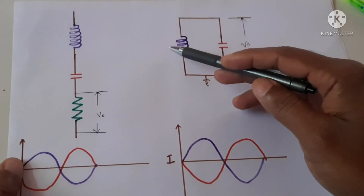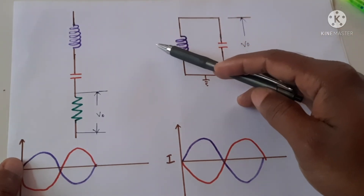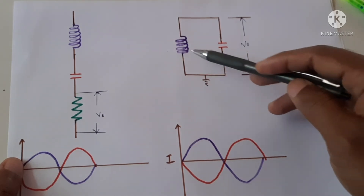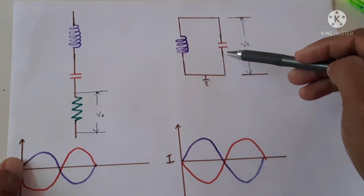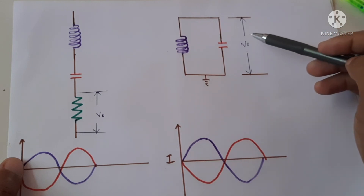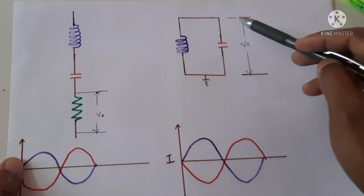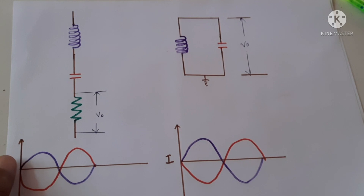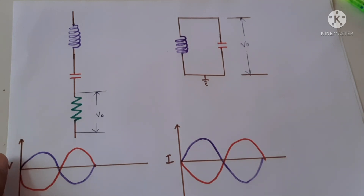At frequencies less than the resonant frequency, the inductor will act like a short circuit and more current will flow through it, so the voltage output will be less. If the frequency is higher than the resonance frequency, the capacitor acts more like a short circuit and most of the current flows through that, so the output voltage will also be less. Only when the capacitive reactance and inductive reactance are equal does the full voltage appear across the output. This is how series resonance and parallel resonance circuits work, and using these properties we can select a particular frequency.